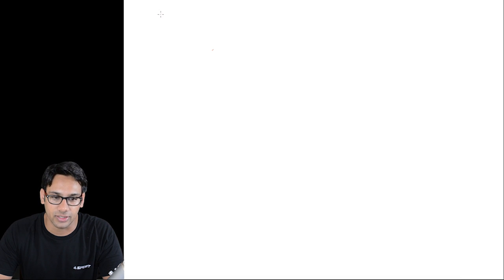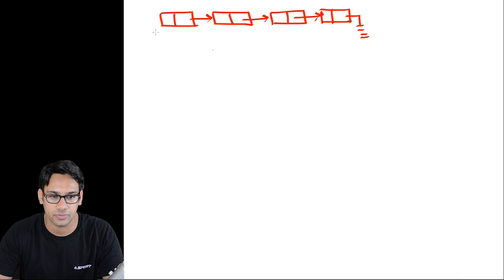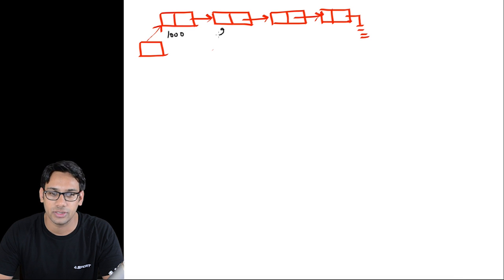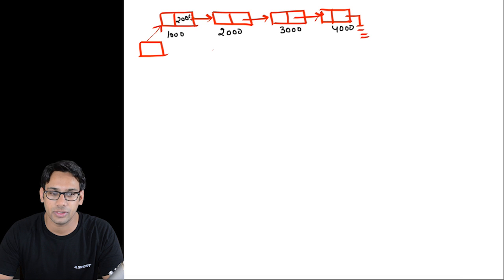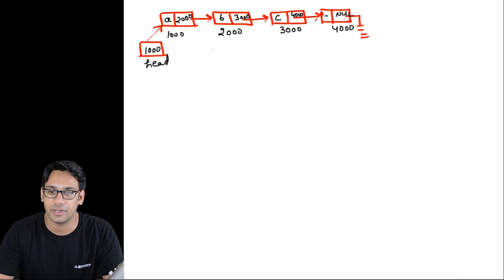Suppose we have this given linked list. It has some data and addresses — address 1000, 2000, 3000, and 4000. The link parts store 2000, 3000, 4000, and null respectively. The head stores 1000. The data present in this linked list is a, b, c, and d.